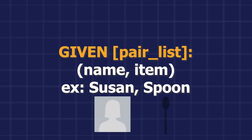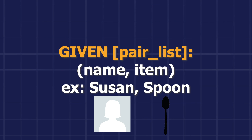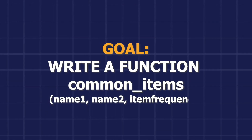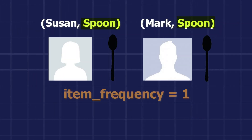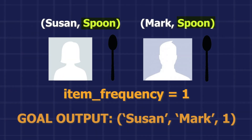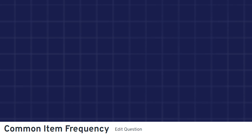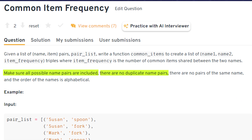Given a list of name-item pairs, write a function called 'common_items' to create a list of name1, name2, item_frequency triples, where item_frequency is the number of common items shared between the two names. Make sure all possible name pairs are included, there are no duplicate name pairs, there are no pairs of the same name, and the order of the names is alphabetical.